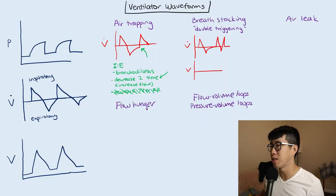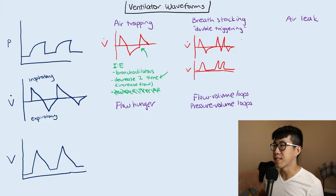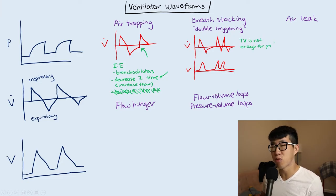And then all of a sudden they have a second breath right immediately after that, which is basically the double triggering. On the corresponding volume curve, you're also going to see a normal breath and then just two quick breaths in succession. Usually when this occurs, it's a sign that the tidal volume is not enough for the patient — the patient is actually asking for more tidal volume.